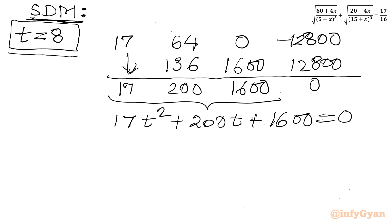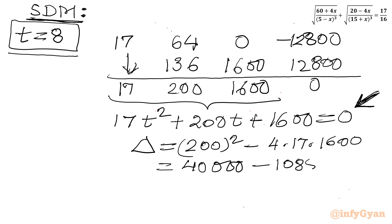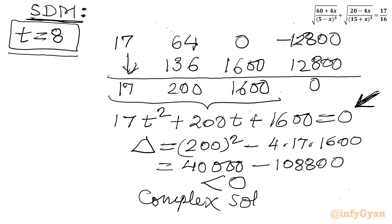Base solution is confirmed. Let us find the remaining two real solutions from this quadratic equation. I will check only the discriminant. Discriminant will be b squared minus 4 times 17 times 1600. Square of 200 is 40,000 minus 68 times 1600, which is 108,800. You can see this will come out negative, so it will generate complex solutions. So we will write: rejected.